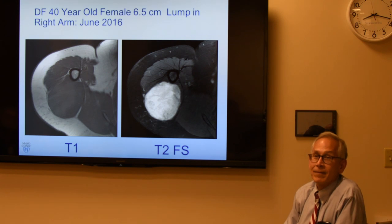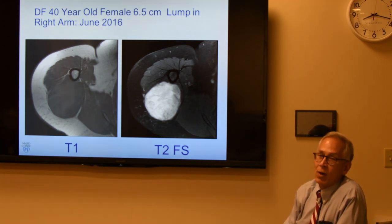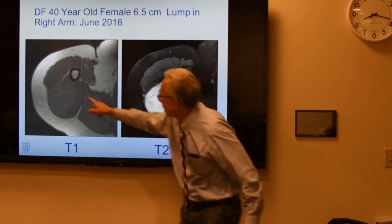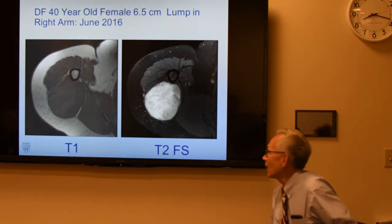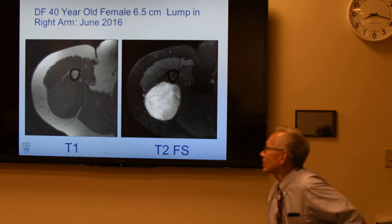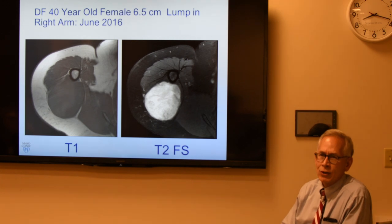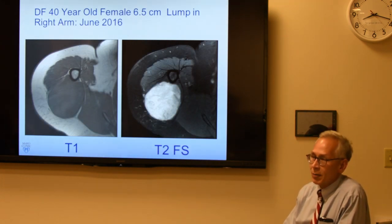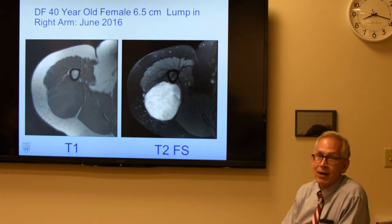Here's the MRI. On T1 it's not a fatty tumor because fat should be white but it's not, so it's like muscle. On T2 it's bright. At this point we technically call it indeterminate but worrisome. It's deep. It's not a hematoma, not a cyst, and not a lipoma — that's what you can tell from this.